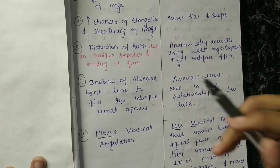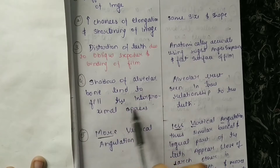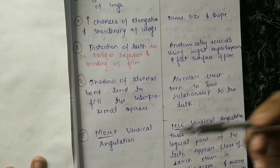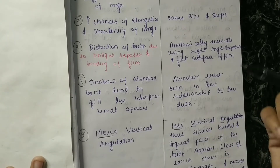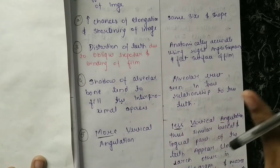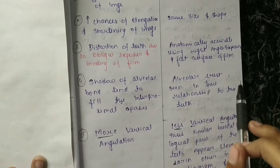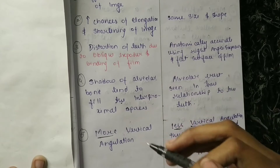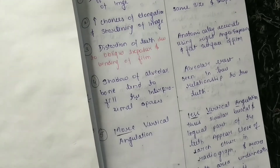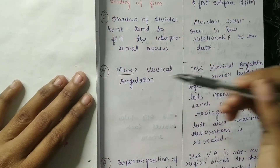The fourth difference: in short cone, the shadow of the alveolar bone tends to filter into interproximal spaces. In long cone, the alveolar crest is seen in true relationship to the teeth. Because long cone gives sharp details, there is no problem — the alveolar crest shows its true relationship with the teeth. In short cone, diffusion and distortion cause the alveolar bone shadow to appear in interproximal spaces.